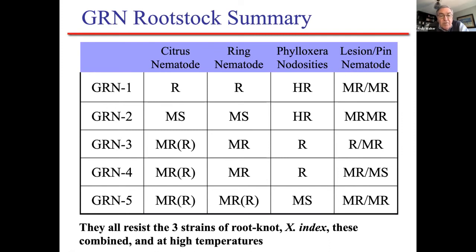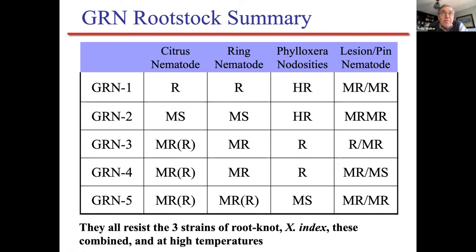We've done quite a bit of work on nematodes over time. The GRN rootstocks were produced and released about eight years ago. They resist three strains of root knot nematodes — very aggressive ones that feed on Freedom and Harmony as well. They resist Xiphinema index, they resist all those nematodes combined, and they resist them at high temperatures where resistance often breaks down for root knot nematode. They also resist other nematode types differentially. Looking at this table, GRN1 has the best resistance of any rootstock material so far in terms of nematode resistance, but it's very difficult to propagate. GRN2, 3, and 4 have performed very well — they're very easy to graft and have good generalized nematode resistance. The MS designation is for moderately susceptible, MR for moderately resistant, and R for resistant.